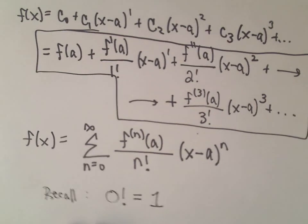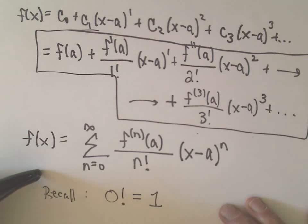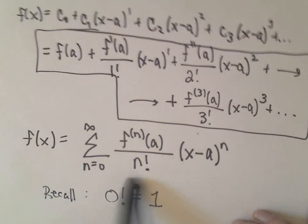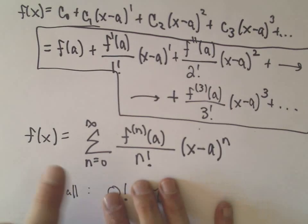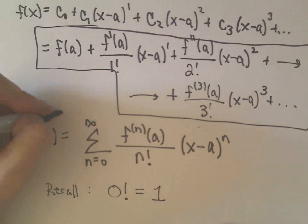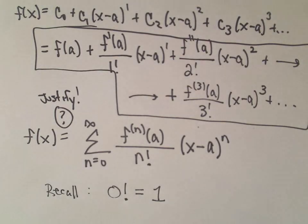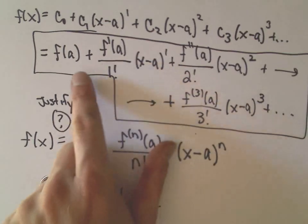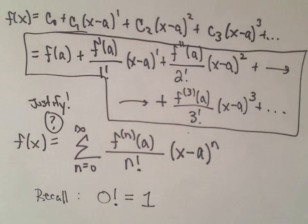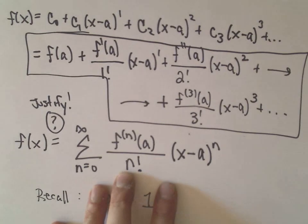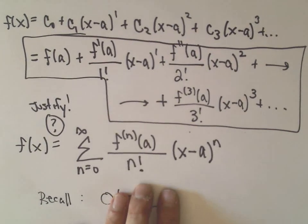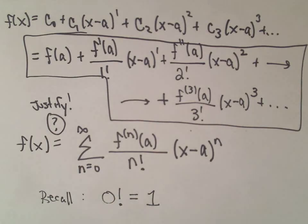In another video I do want to address when it actually makes sense to say these are equal — assuming a function has a power series representation, here's how you find it, but when is it valid? We'd have to justify that using Taylor's remainder theorem. Also, geometrically, what does it mean to center the series at different values? I hope this makes sense — it's good to know where these formulas come from instead of just memorizing them. Good luck!